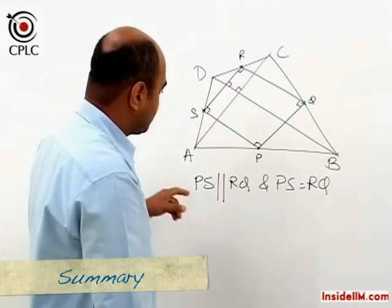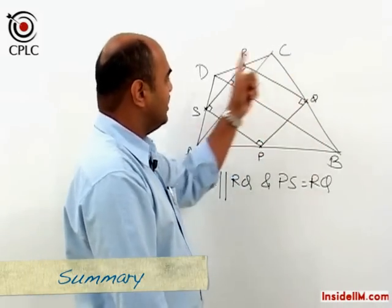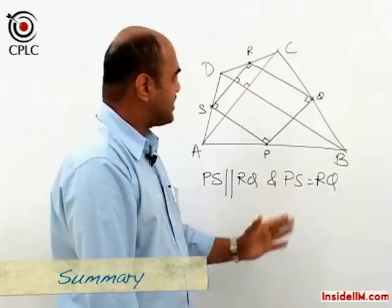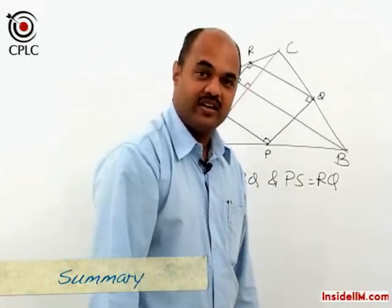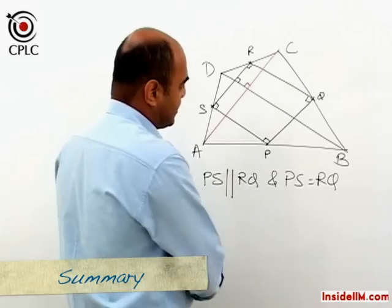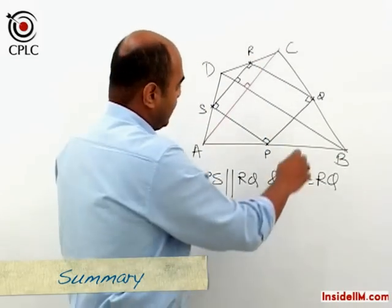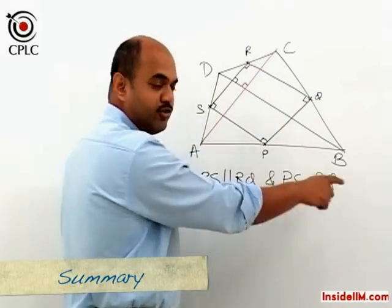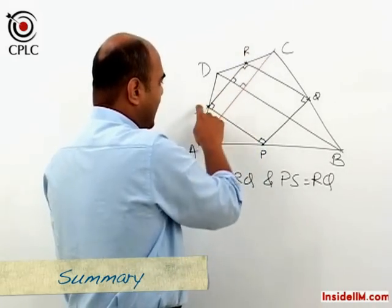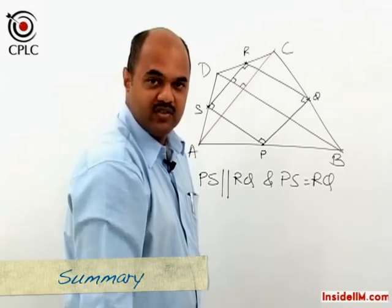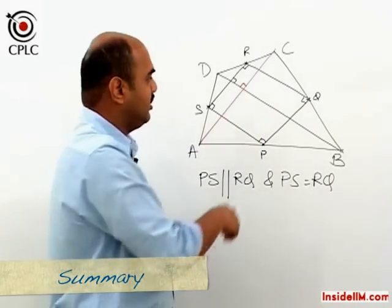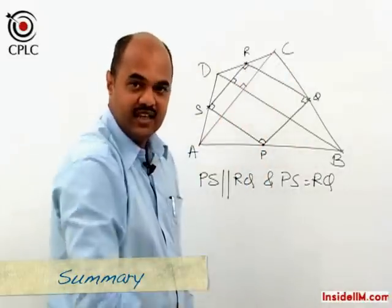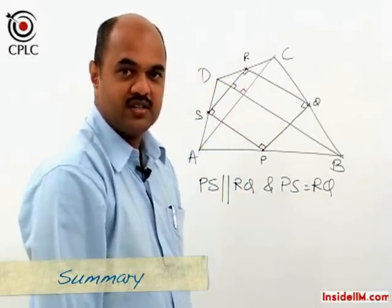Let's look at one more variation. Suppose ABCD is actually a rectangle. In a rectangle, diagonals are equal, so BD equals AC. Since RQ is half of BD and RS is half of AC by the midpoint theorem, and BD equals AC, we get RQ equals RS. In this manner all four sides of PQRS become equal, so we can conclude that PQRS is a rhombus.